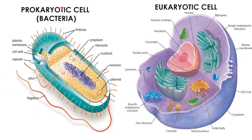At the start of this lecture I discussed the differences between prokaryotic and eukaryotic cells. Now I am going to discuss the similarities between these two types of cells. Both types of cells have a cell membrane, cytoplasm, ribosomes, and genetic material — that is DNA, deoxyribonucleic acid.